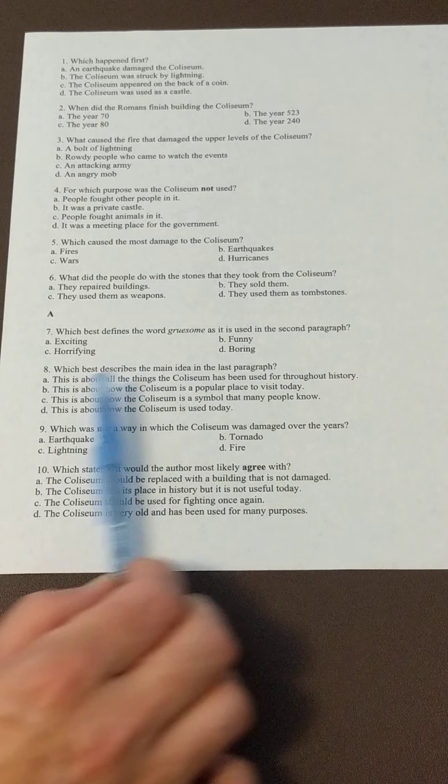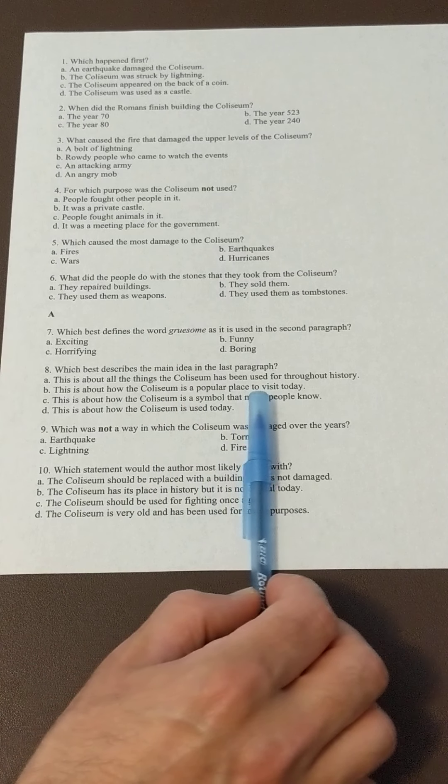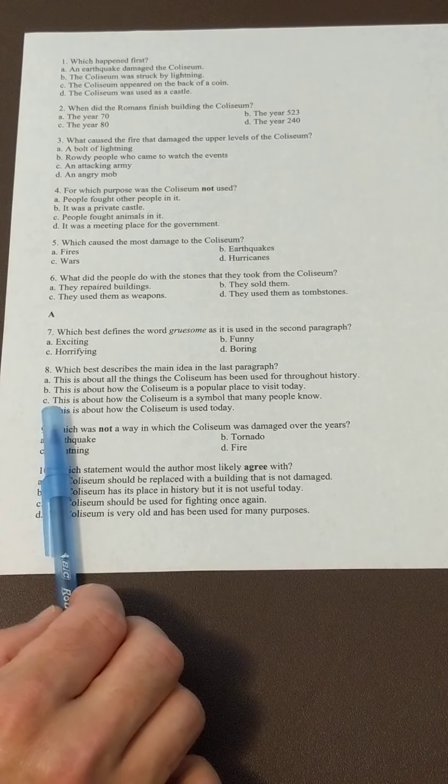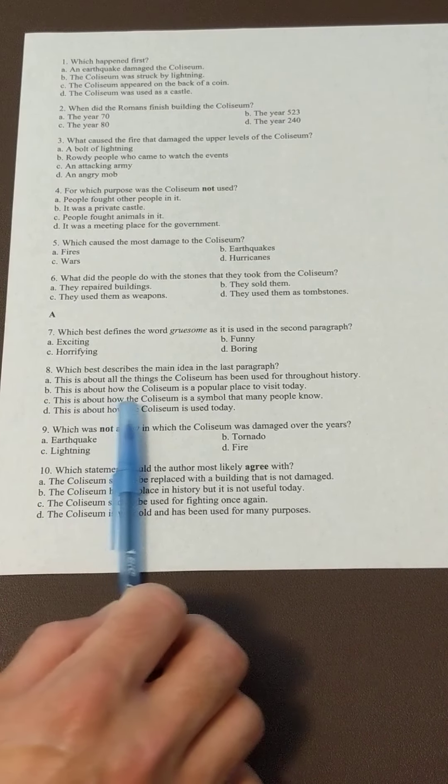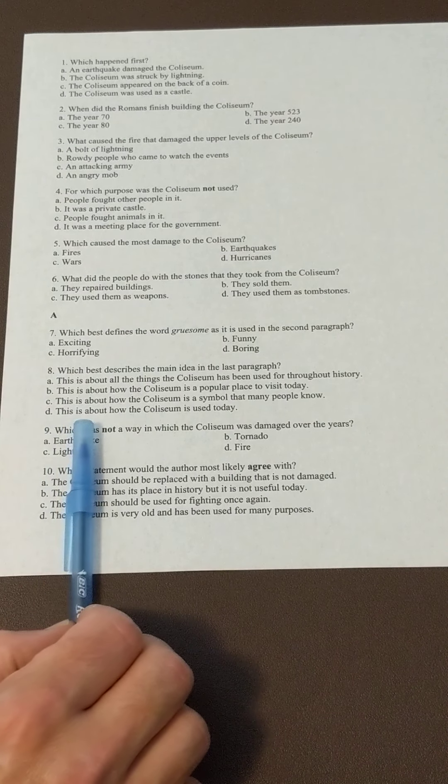has been used for throughout history; B, this is about how the Colosseum is a popular place to visit today; C, this is about how the Colosseum is a symbol that many people know; or D, this is about how the